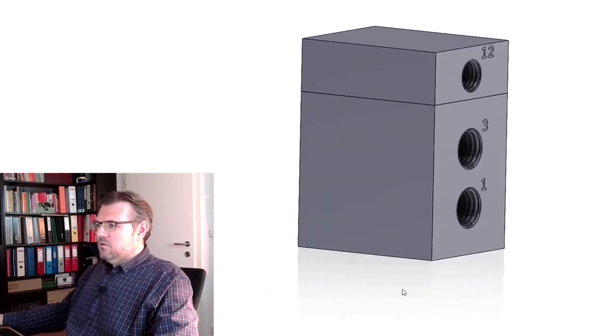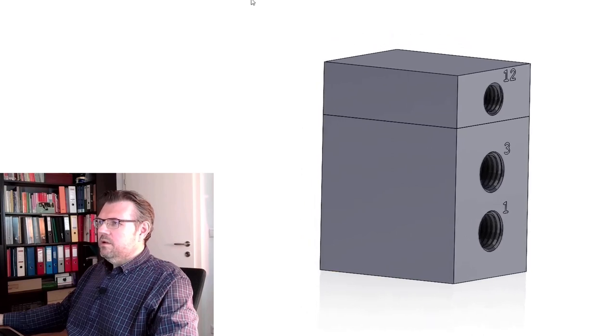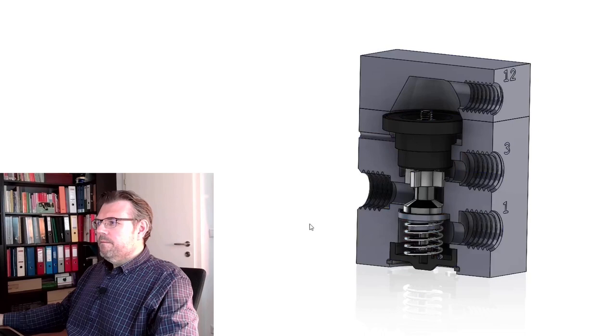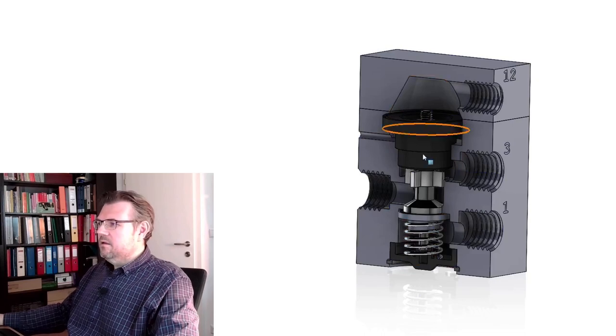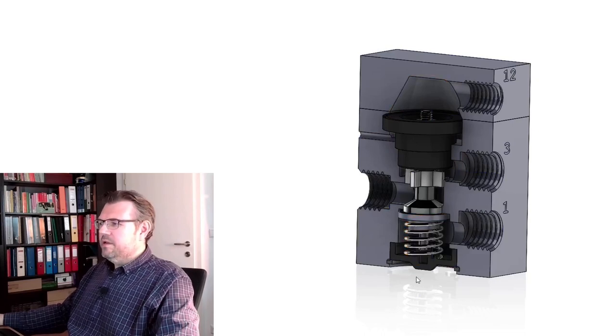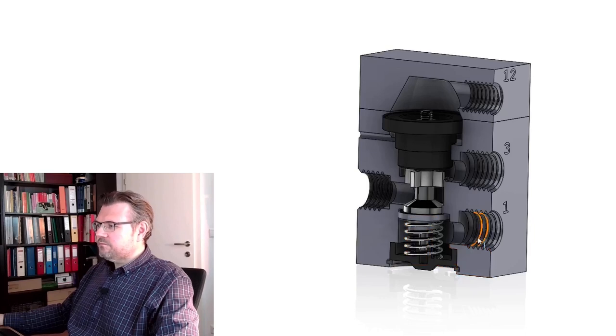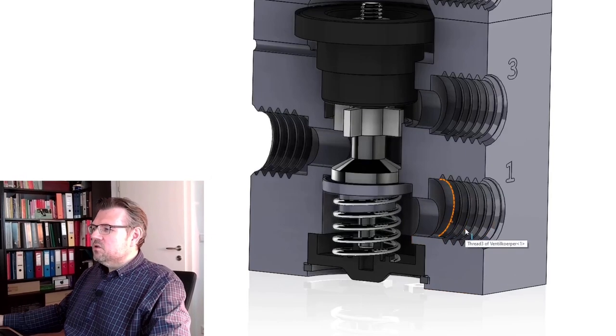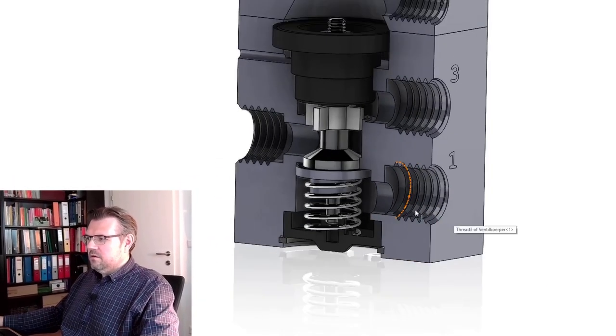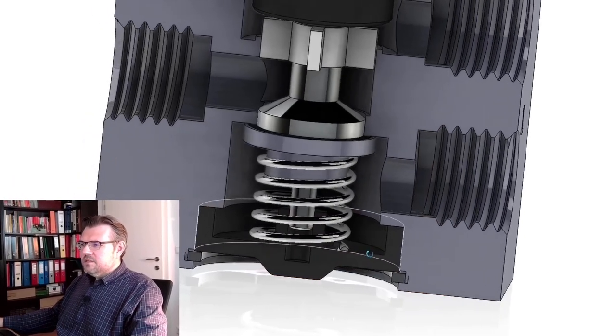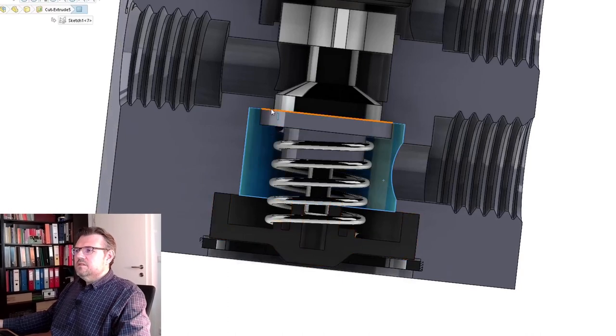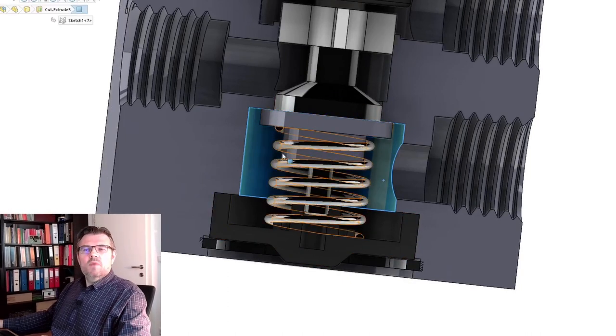So I would suggest to cut this thing open and see how it looks inside. Oh, we see already a lot of stuff there. So let's analyze it, let's analyze the function like before. So here's the 1 connector, this is connected to this area, here this is sealed, there is nothing much going on. So 1 is blocked right now.